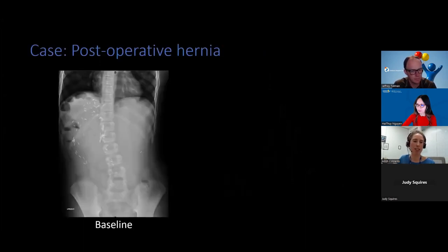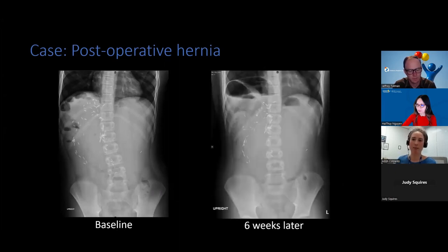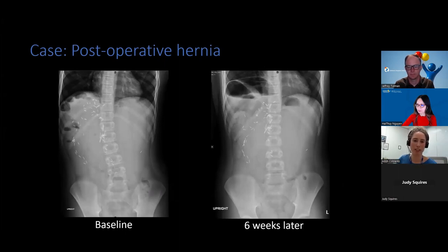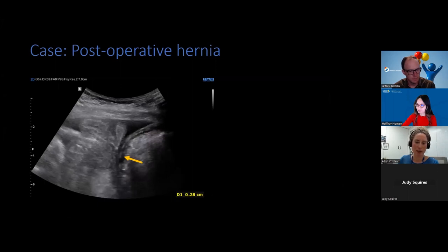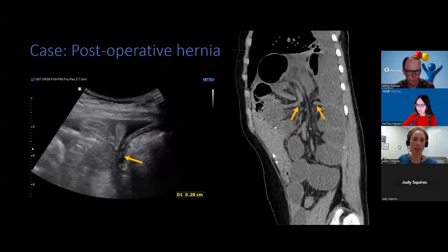This was the baseline abdominal radiograph of a 12-year-old male post-pheochromocytoma resection. Six weeks later, he presented with abdominal pain and vomiting, and there was a substantial interval change in the contour of the right hemidiaphragm, now asymmetrically elevated. Ultrasound showed the diaphragmatic free edge or defect with herniation of bowel and omental fat into the inferior thorax. A confirmatory CT demonstrated a diaphragmatic defect as a post-operative complication.